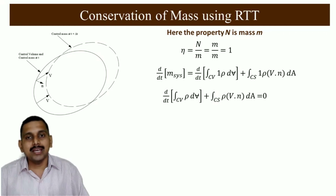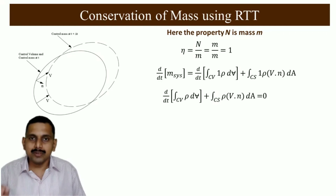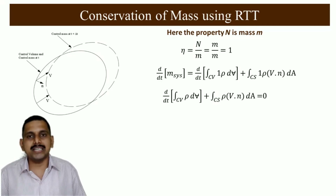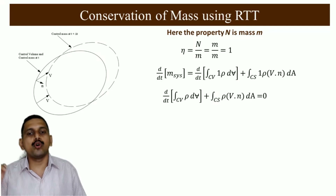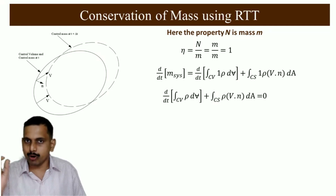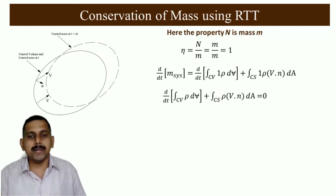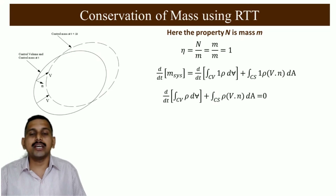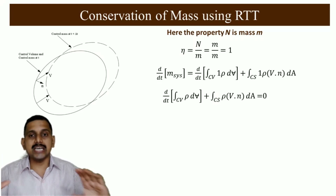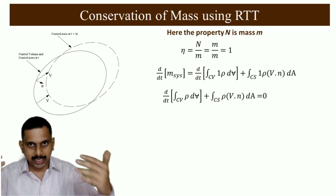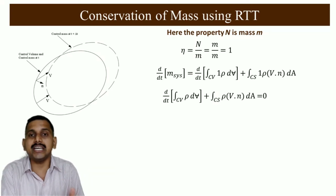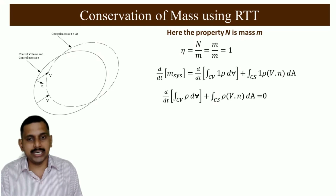Since the left-hand side is zero, the continuity equation in integral form becomes: d/dt of the integral over the control volume of ρ dV, plus the integral over the control surface of ρ·(V dot n) dA equals zero. This is the integral form of the continuity equation.